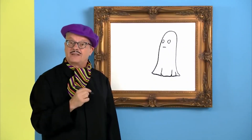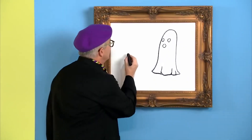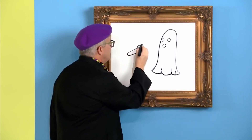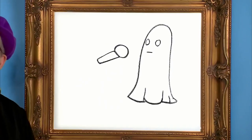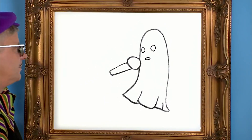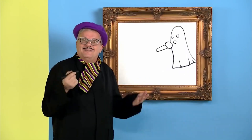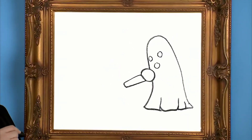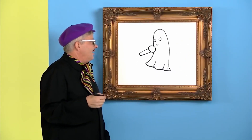Wait, I think he's trying to say something. I'll draw him a microphone. What's a ghost's favorite food? I don't know, what? Boulogne sandwiches. Get it? Boulogne.